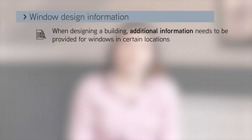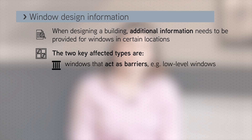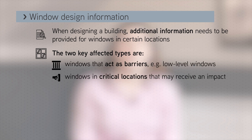In building control, we often receive inaccurate information about window design. When designing a building, additional information needs to be provided for windows in certain locations. The two key types affected are windows that act as barriers, such as low-level windows, and windows in critical locations that may be hit by something.